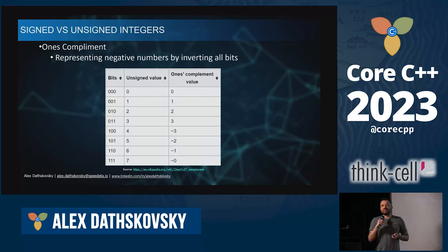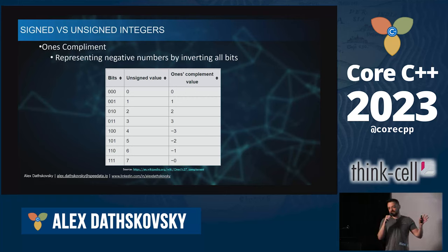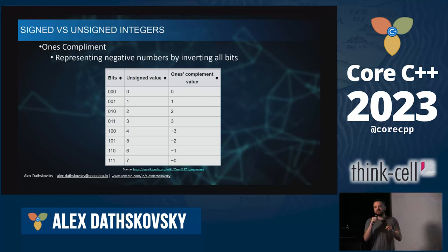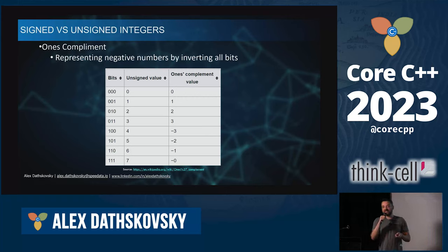To represent a negative number in one's complement, you invert all the bits. For example, the value 4 in bits, when treated as a one's complement signed value, represents minus 3. The problem is you can represent fewer negative values — the pattern for 7 represents minus zero, which is wasted space.